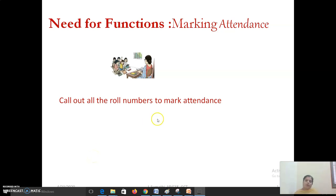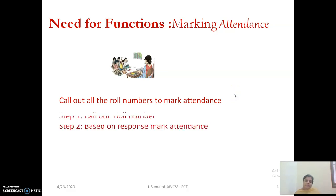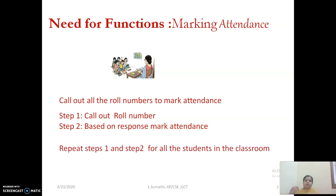Today we are going to see the need for functions through a simple attendance marking system. Teachers call out roll numbers in class to mark attendance. In general, two steps are involved: they first call out the roll number, and based on the response they mark the attendance. These two steps are repeated for all students. If there are 50 students, the teacher has to repeat this two-step process 50 times.